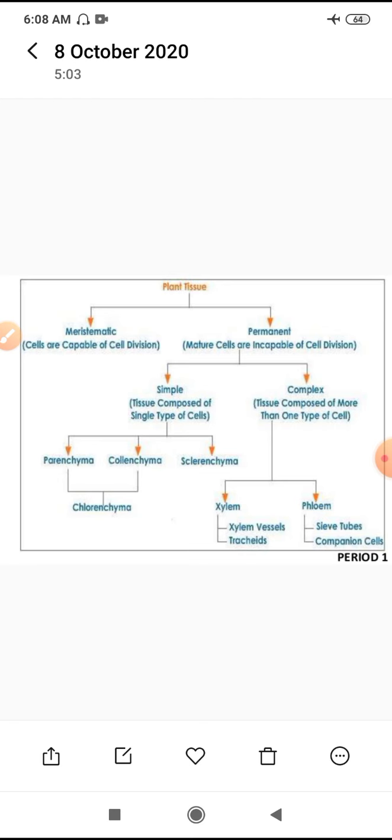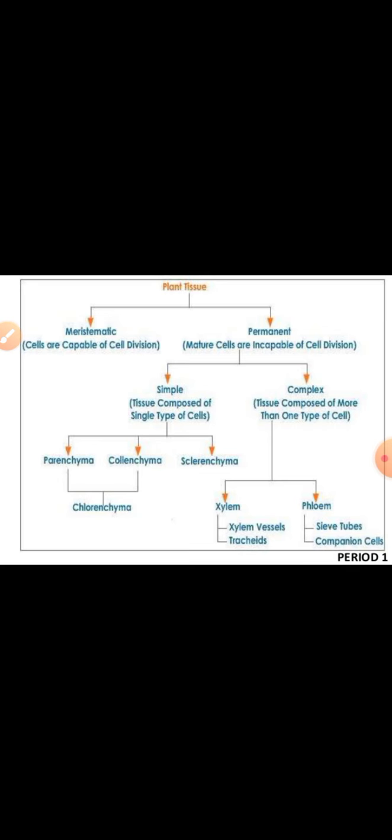The same thing applies to phloem — it is also called a complex tissue. Why is this called a complex tissue? Because it is composed of more than one type of cell. There are Sieve Tube elements, Sieve Cells, Companion Cells, Phloem Parenchyma, and Phloem Fibers — four elements. These four elements are composed to carry out one kind of activity. Xylem is responsible for conduction of water. Phloem is responsible for conduction of food and amino acids. These are called complex tissue.